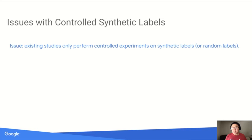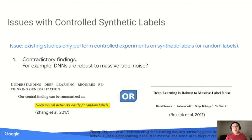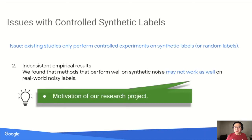This is problematic because synthetic and real-world noise follow very different distributions. For example, people have found different or even contradictory findings on synthetic labels — such as whether deep networks are robust to massive label noise. There's no clear answer because a slight change in synthetic label noise setting can result in very different or even contradictory findings. More importantly, a vast majority of methods were all developed on synthetic labels, but when applied on real-world industry applications, methods that perform well on synthetic noise may not work as well on real-world noise labels. This is our number one motivation.